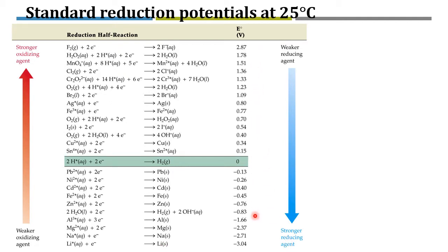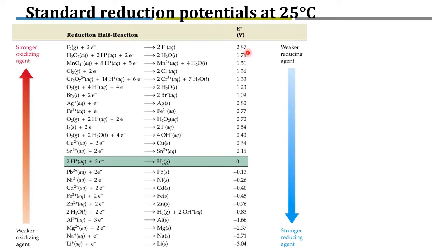The E value shows the potential of the reduction reaction. A high value means the reaction would occur very easily, while a lower value means the reaction can occur but with less potential. So if you have a competition between two reactions — for example, fluorine receiving electrons versus copper ion receiving electrons — fluorine has a higher potential, so fluorine will receive electrons more easily than copper ion.